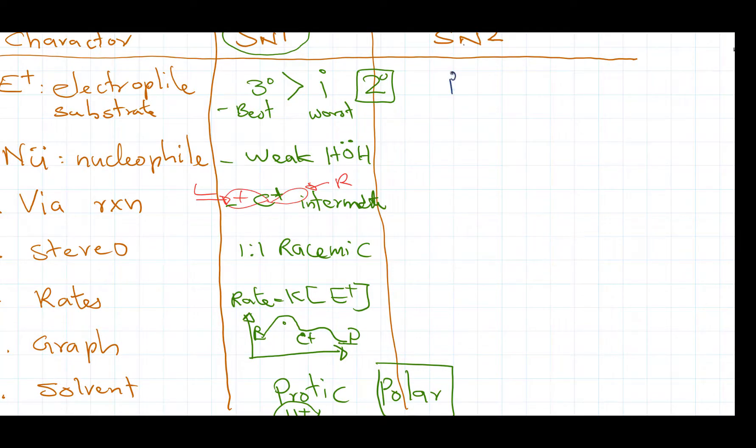Now let's look at SN2. The primary is the best to react. There's a lot of space to hit from the backside and tertiary is the worst.